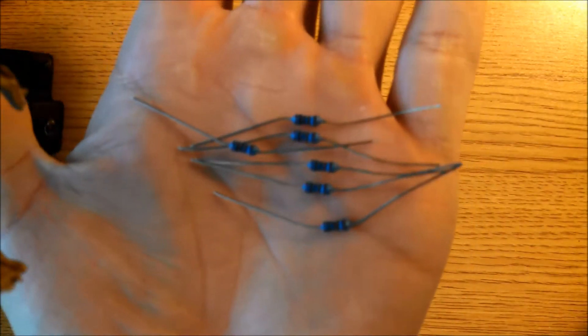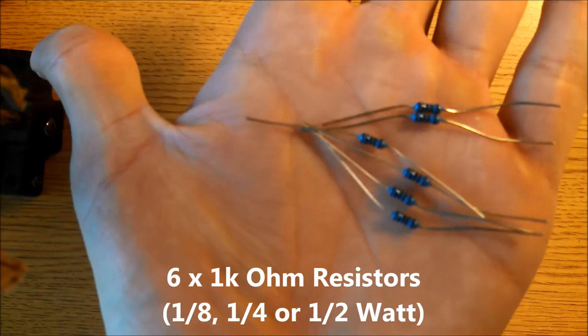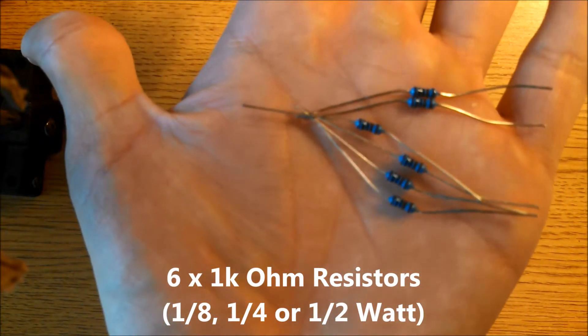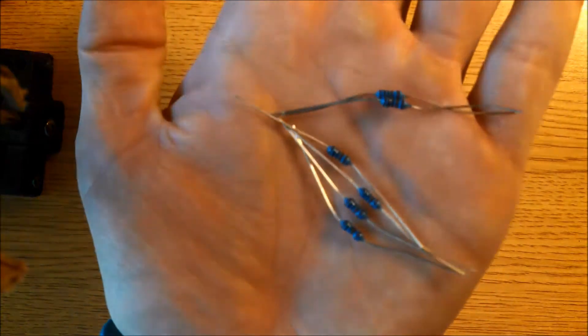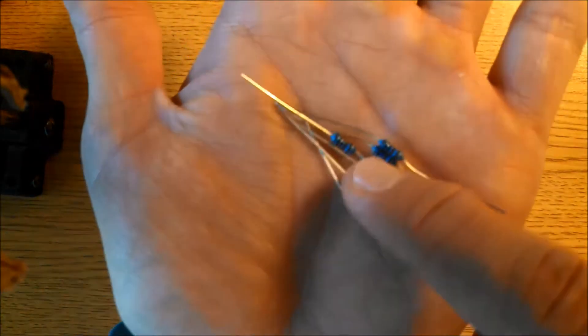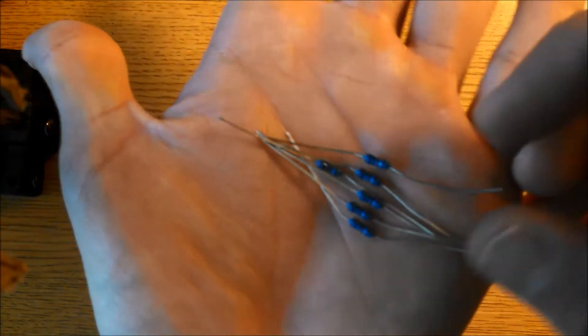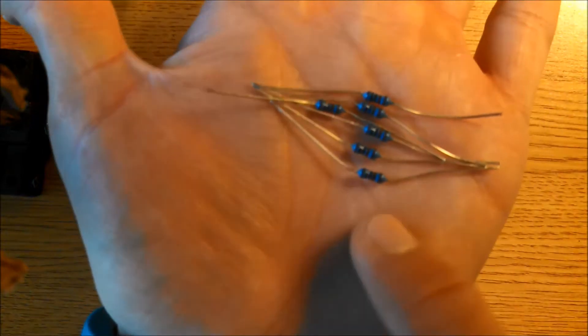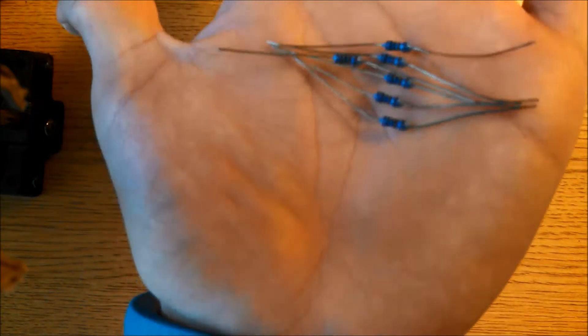You will need six 1k ohm resistors. These are quarter watt here, but you could either get quarter watt, 1 eighth of a watt, or half of a watt. It doesn't matter which ones you get. I suggest you get quarter watt or 1 eighth of a watt, whichever one is cheapest. The only upside to getting 1 eighth of a watt is that these resistors are just a little bit smaller.